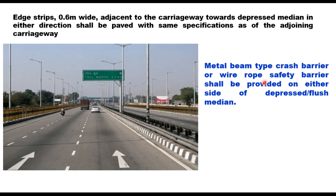Metal beam type crash barrier or wire rope safety barrier shall be provided on either side of the depressed or flushed median. The depressed median shall have a suitably designed drainage system so that water does not stagnate in the median. For the drainage system, IRC SP42 shall be followed.